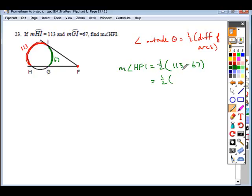If we take this difference here, we wind up with 46. Half of 46 is going to give us our angle measure of 23.